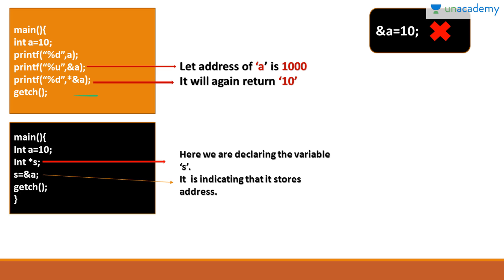In another example, a = 10, int asterisk s, and s = &a. We are storing the address of a in the pointer variable s. The declaration int asterisk s indicates that s stores an address. Writing &a = 10 is wrong because &a points to the address of the variable a, not the value of a. So this assignment is incorrect.